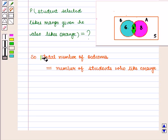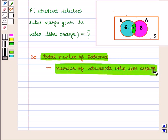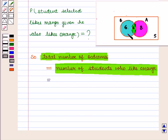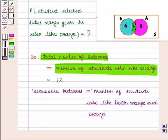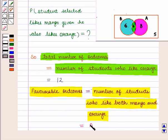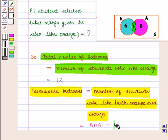The total number of outcomes will be equal to the number of students who like orange, which is given by set B, and the number of elements in set B is 12. The favorable outcomes will be equal to the number of students who like both mango and orange, given by set A intersection set B. From the Venn diagram, A intersection B is 6, so the number of favorable outcomes is 6.